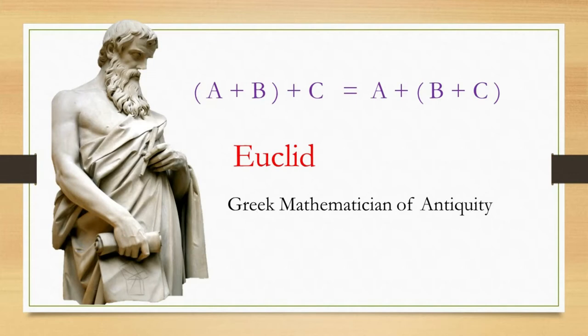Here, the proof is based on the commutative property, provided by Euclid, the Greek mathematician of antiquity. You can access that by clicking the link in the monitor or in the description below.